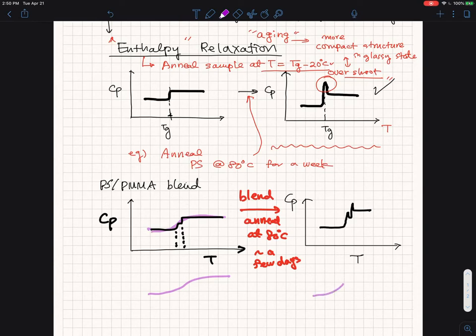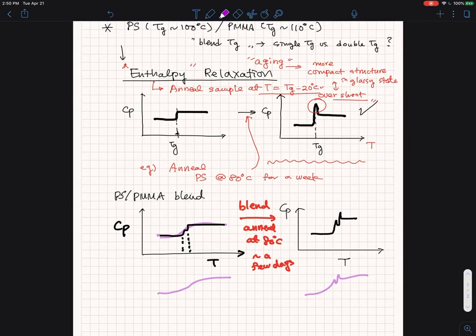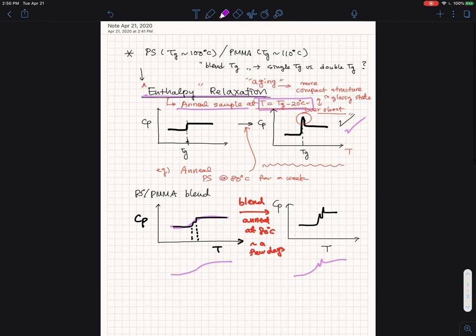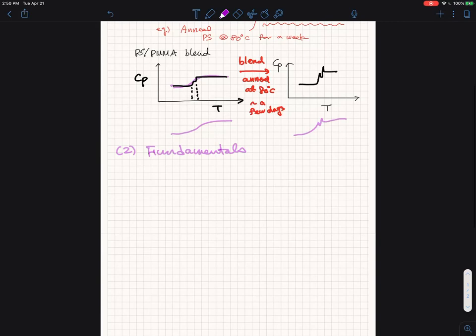It looks like a broad transition, whether there is a single TG or two TGs are there. Whereas when you do this experiment, you are seeing a little blips. And then you will see that there are two incompatible domains whose TG happen to be the same or not. So this enthalpy relaxation technique is essentially you are aging your sample at the temperature, sub-TG annealing, making the structure more compact. This is a utility of that experiment.